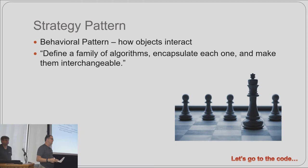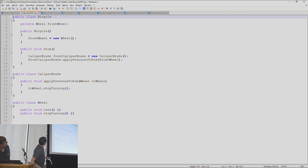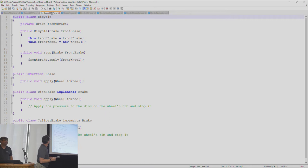We can show you what that looks like using something called the Strategy Pattern — probably many of you have used it even if you didn't recognize it by name. The Strategy is a behavioral pattern from the Gang of Four book. It basically says to define a family of algorithms, encapsulate each one, and make them interchangeable.